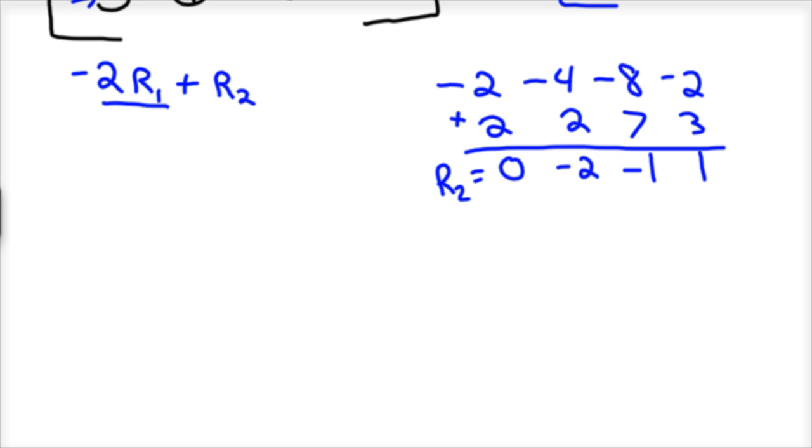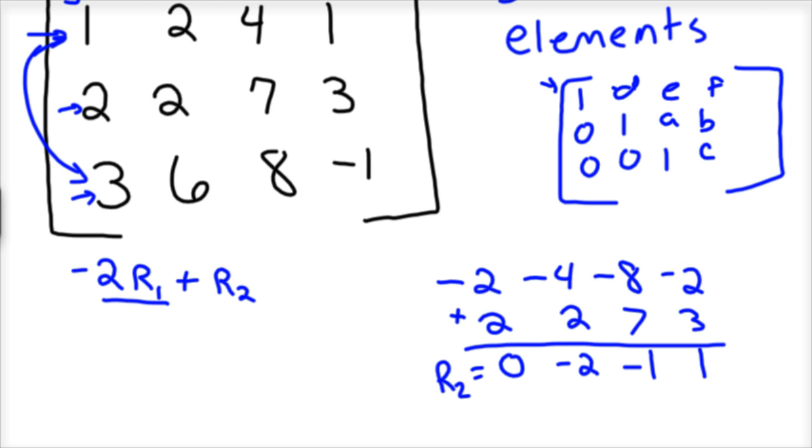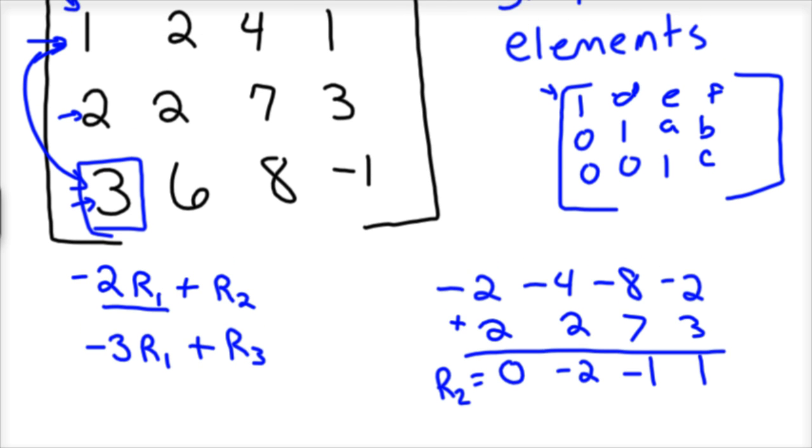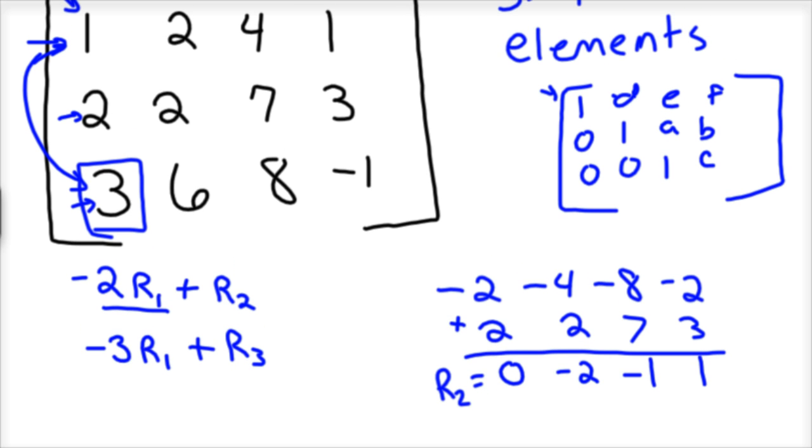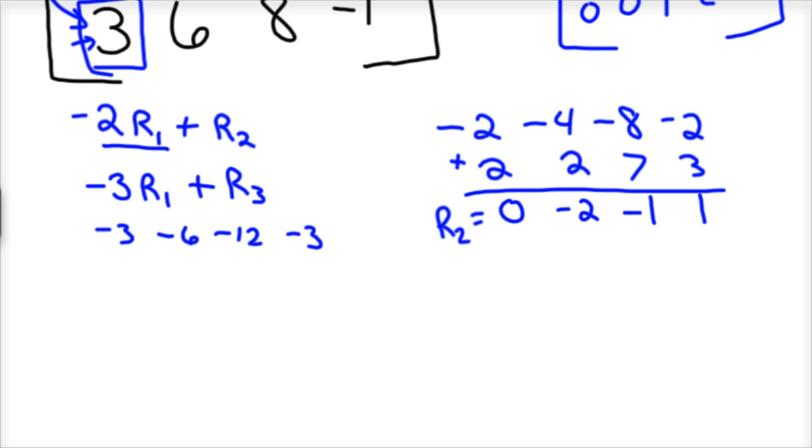Now for row 3, I'm going to go back to my original. And I'm going to do the same thing, but I'm going to take, I want a 0 in this spot here. So I'm going to take negative 3 times row 1, and add that to row 3, and get a new row 3. So if you take negative 3 times row 1, you would have negative 3, negative 6, negative 12, negative 3. And then we're going to add that to row 3. So 3, 6, 8, negative 1. You add that down, you'd have 0, 0, negative 4, and negative 4.